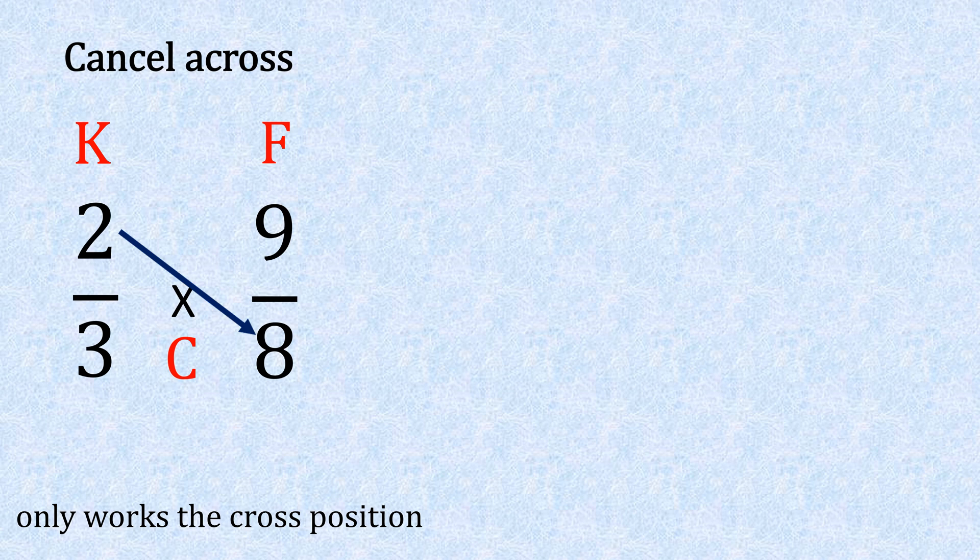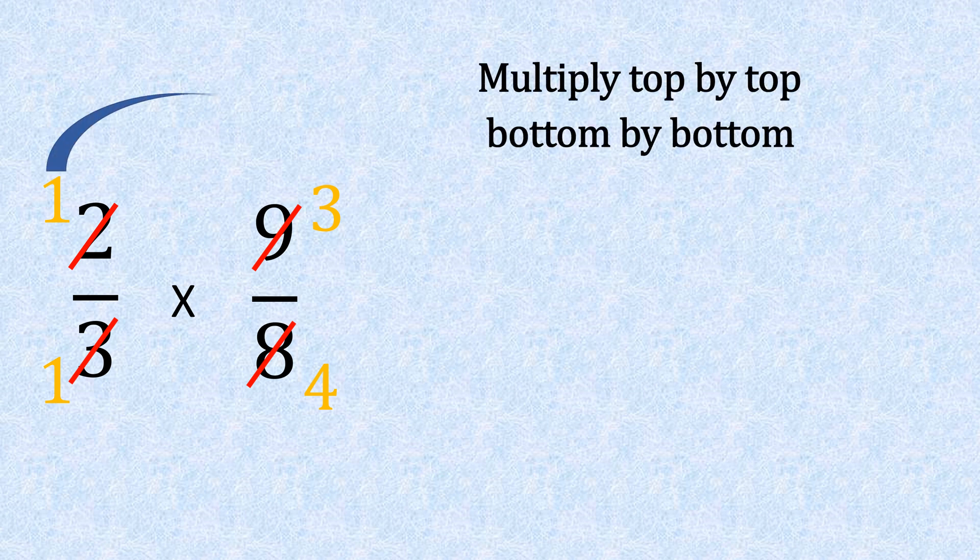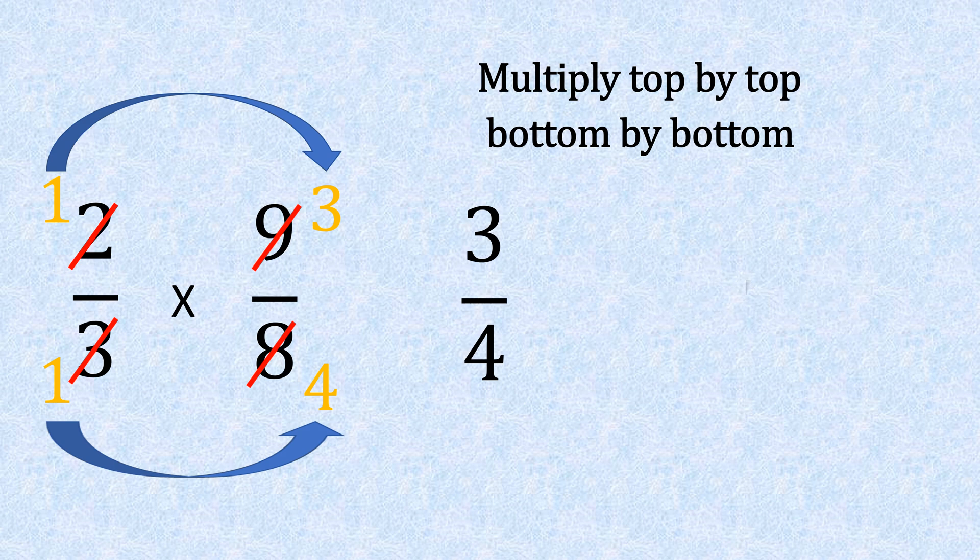So here we have 2/3 divided by 8/9, so KFC. Let's flip, giving us 9/8. Let's change that divide to multiply. Now what we can see here is we can cancel across. If you can do this, you can reduce: 2s into 2 go 1, and 2s into 8 go 4. Then the other side: 3s into 3 go 1, and 3s into 9 go 3. So it gives us two whole new fractions. Let's multiply these: 1 times 3 is 3, and 1 times 4 is 4. That takes us to 3/4, and we don't need to simplify, so this is our answer.